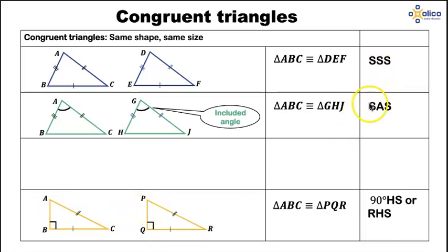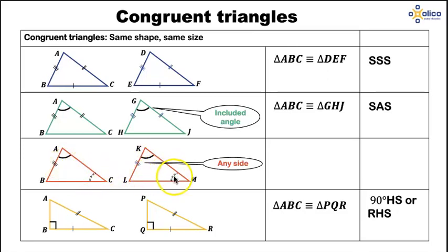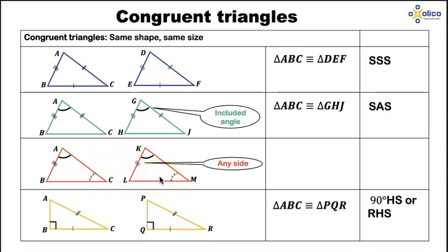We've looked at two sides and an angle, and at three sides. What about one side and two angles? It can be any side, so long as in the one triangle it is the same side that corresponds with the side in the other triangle. Here we've got angle C marked as equal to angle M, and AB are opposite each other. So long as the side is opposite the same corresponding equal angles, the two triangles will be congruent. That is the case of side, angle, angle.